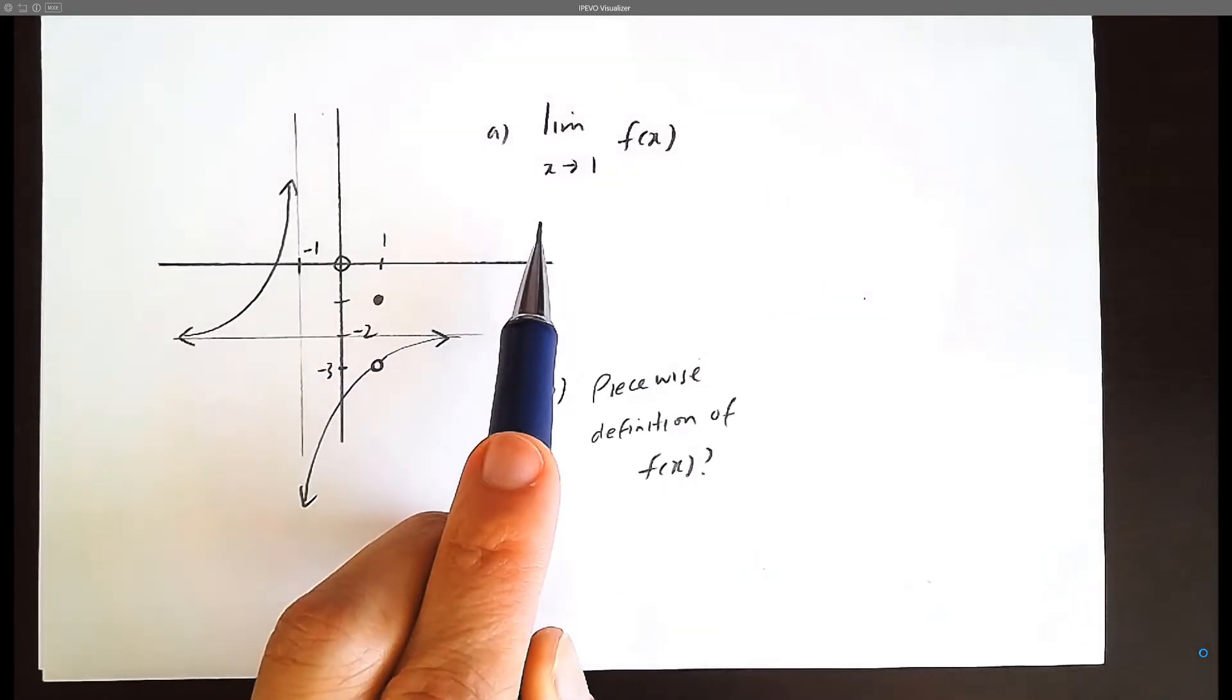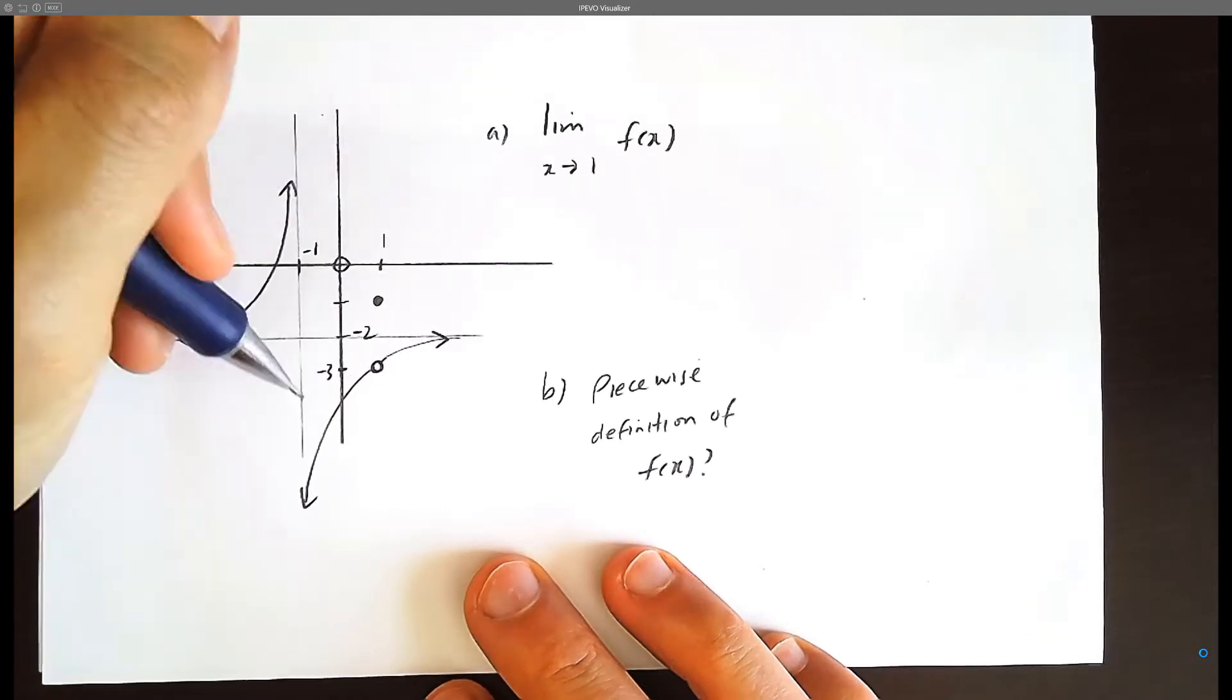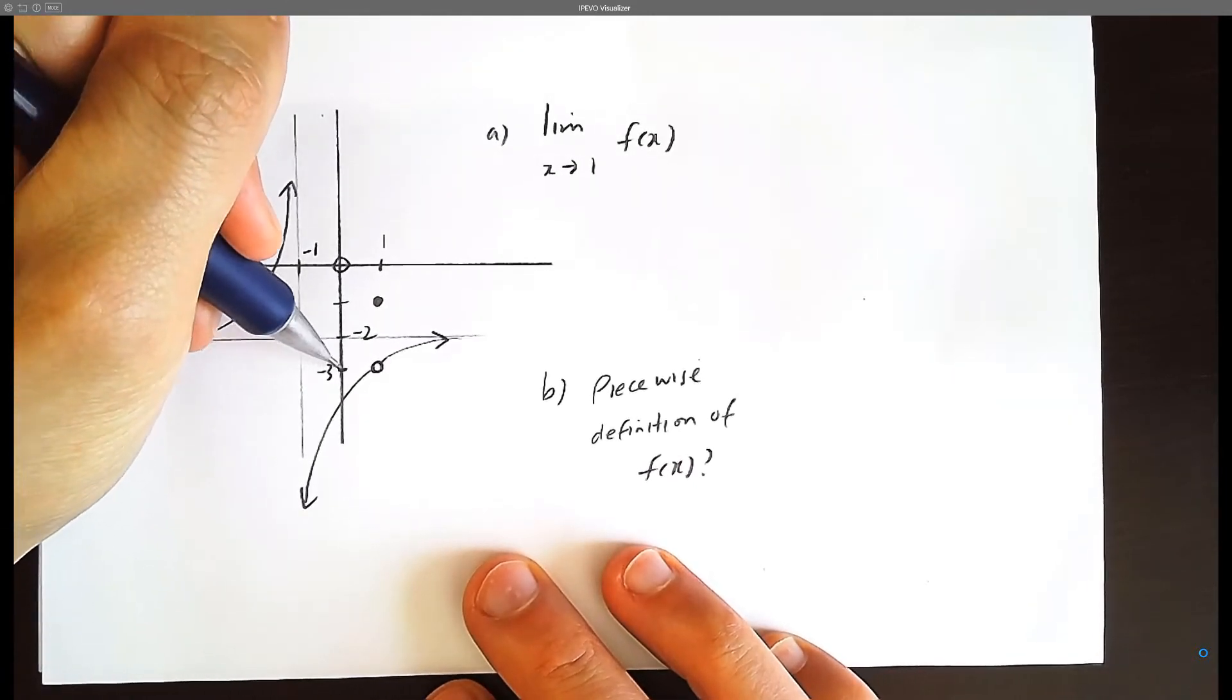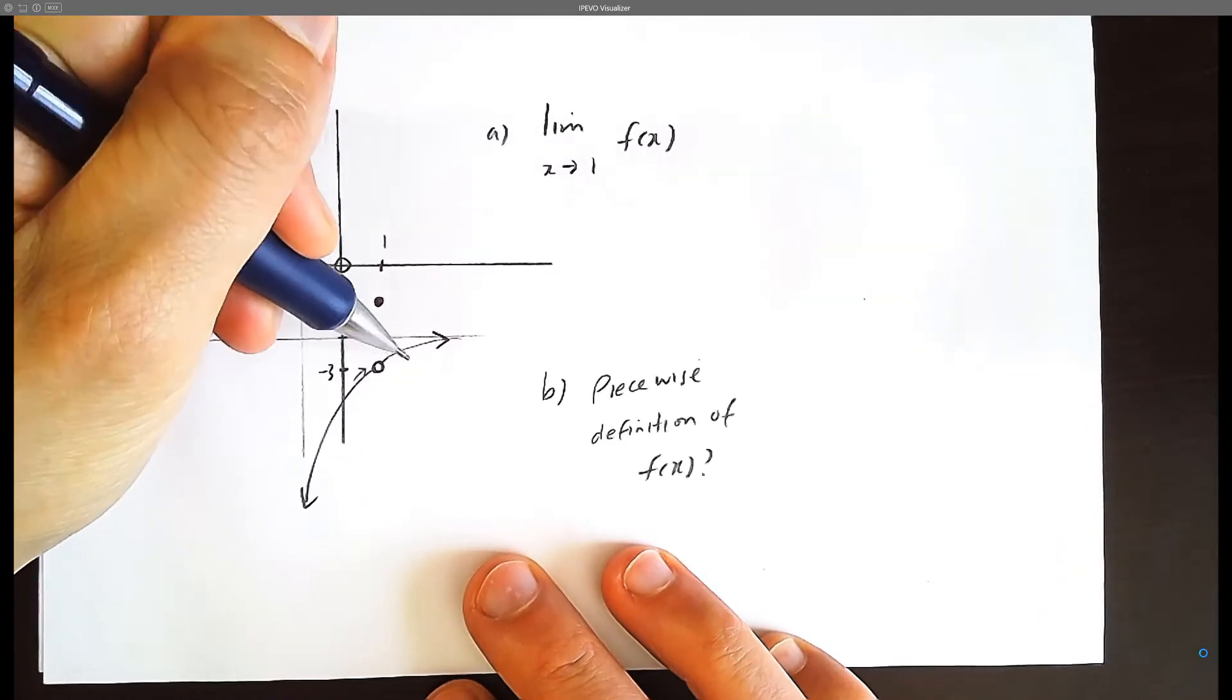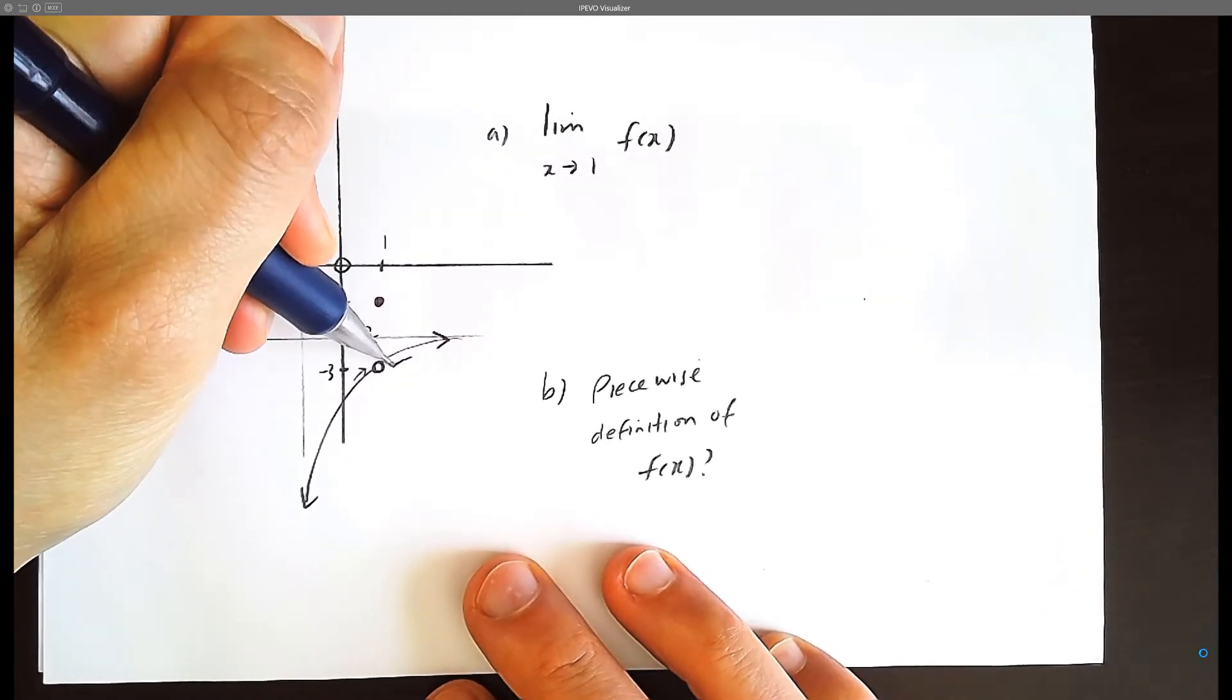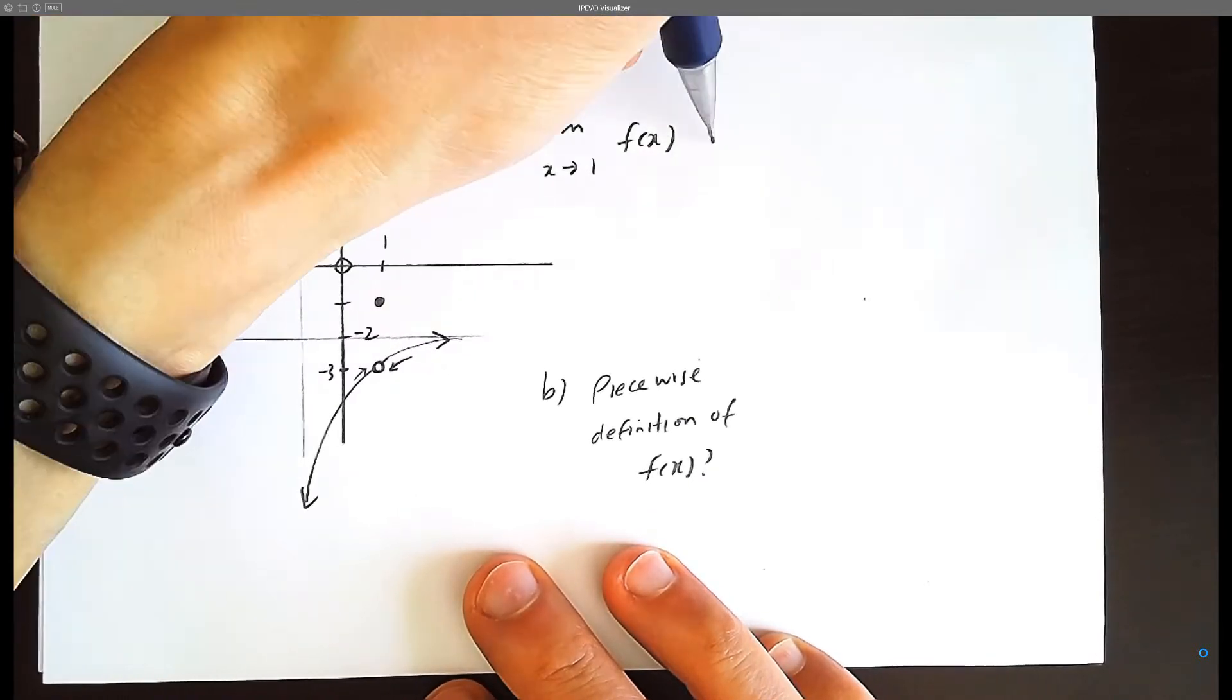What is the limit as x approaches 1 of this hyperbola? Well as x approaches 1 we're coming in from the left approaching this number here which is negative 3, and the word limit means we're approaching also from the right-hand side which is also going to be negative 3. So the answer is negative 3.